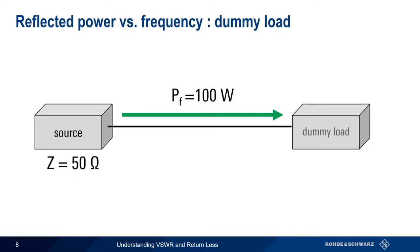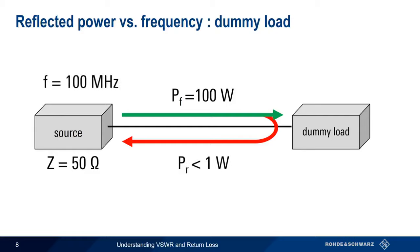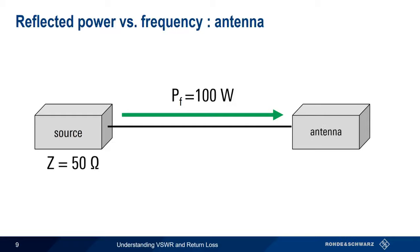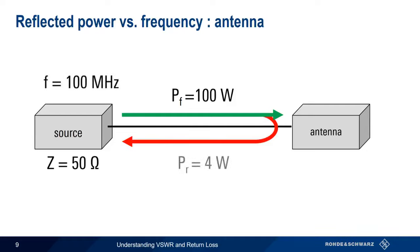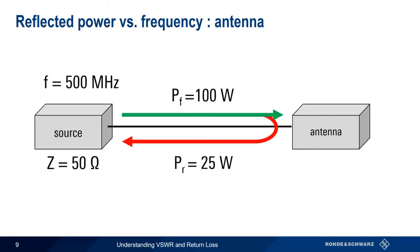If we use our mostly resistive dummy load, the level of reflected power would remain low and roughly the same even as we change the frequency from 100 MHz to 200 MHz, 500 MHz, or even a gigahertz. If, however, we use our antenna as a load, the level of reflected power will be a function of frequency. At 100 MHz, the reflected power is only 4 watts. At 200 MHz, it goes down to less than 1 watt. But at 500 MHz, reflected power is 25 watts, and increases to 50 watts at a gigahertz.